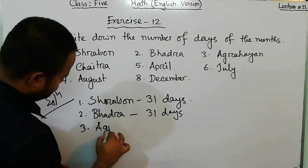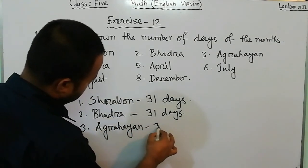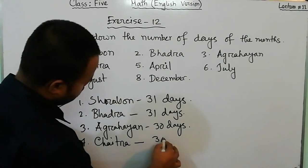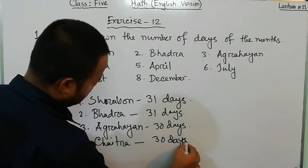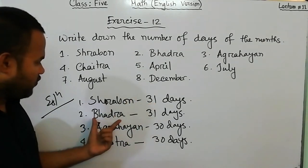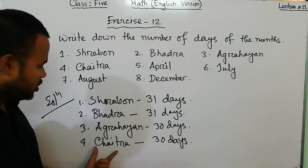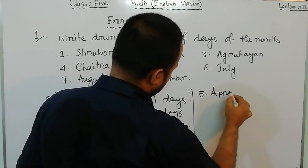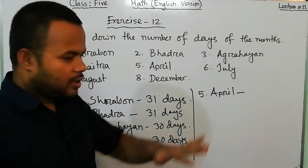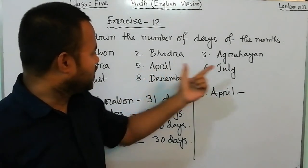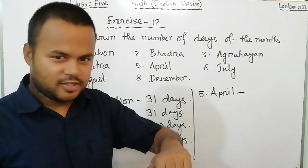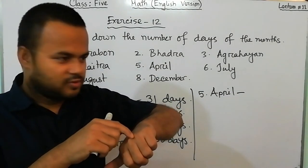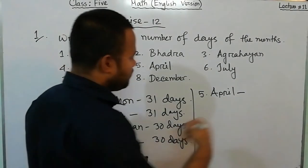Agrahayan: 30 days. Chaitra: 30 days. Now for April: using the hand trick — January, February, March, April — April is in the bottom position, so April consists of 30 days. For July: January, February, March, April, May, June, July — July is on the top, so July consists of 31 days.